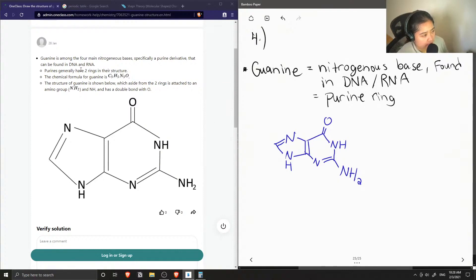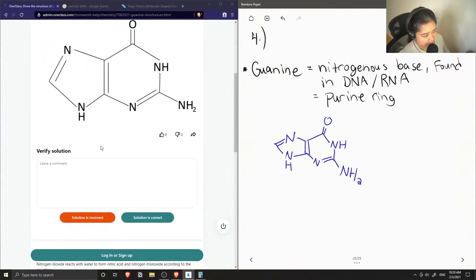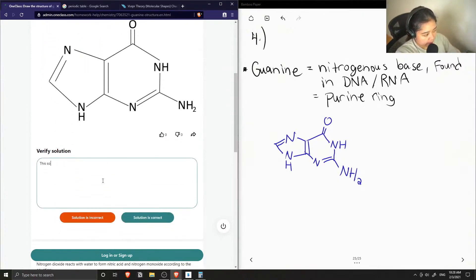Yep, the structure of guanine is shown below, which aside from the two rings is attached to an amino group and an H and has a double bond with oxygen. Okay, so the solution is correct.